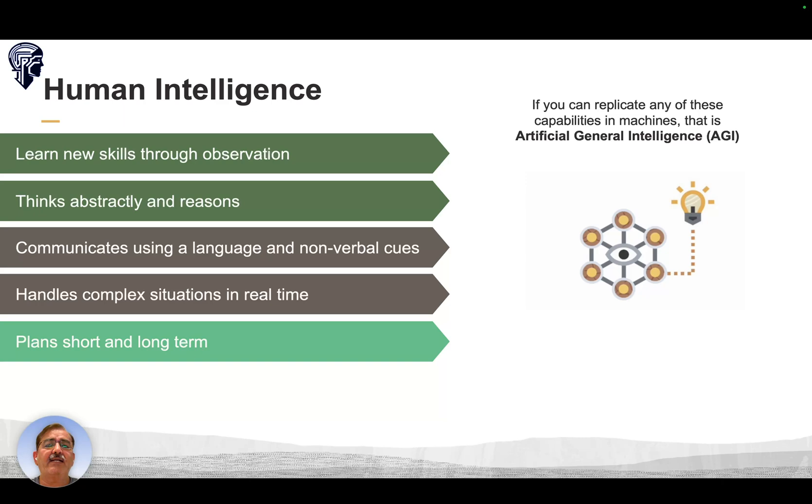If we can replicate any of these capabilities in machines, that is called Artificial General Intelligence, AGI. And when we apply AGI to solve problems with specific narrow objectives, we call it Artificial Intelligence.